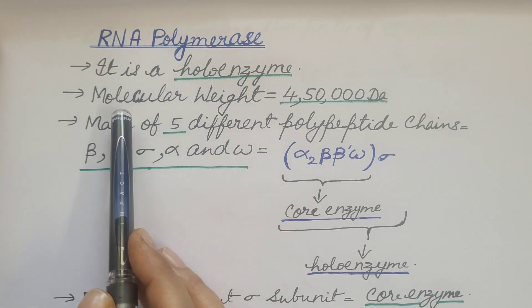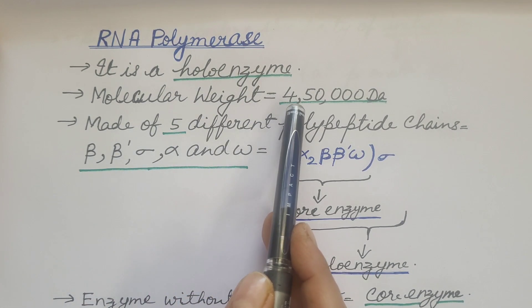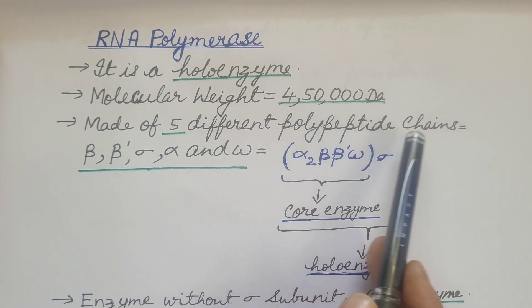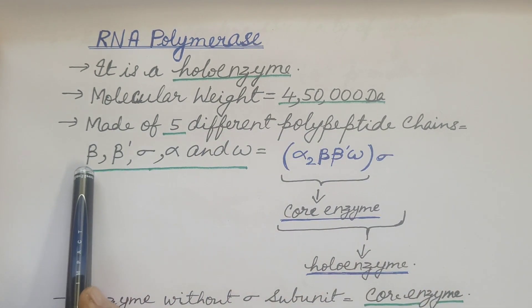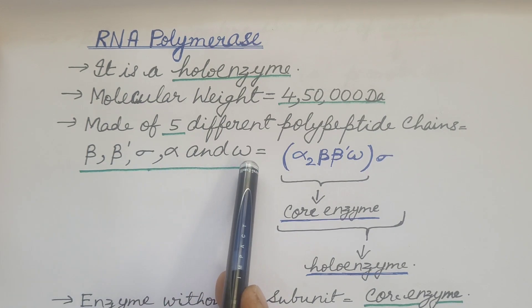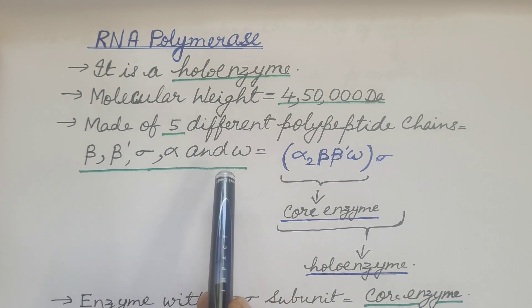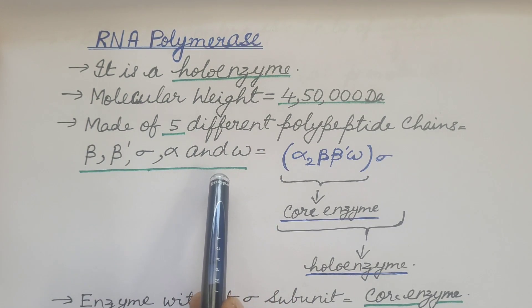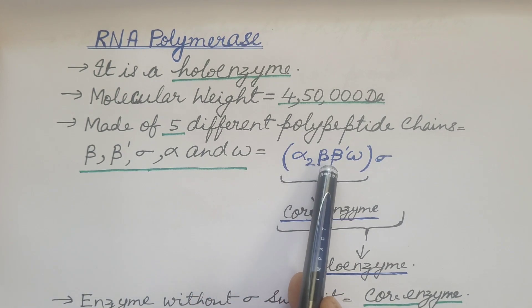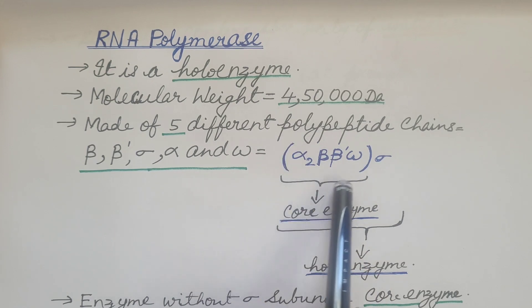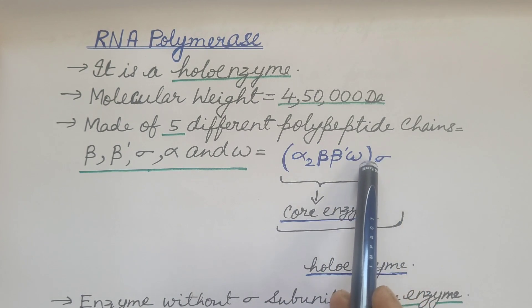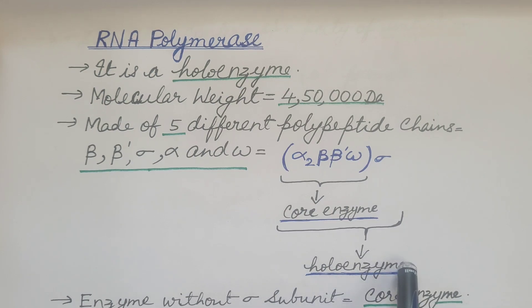RNA polymerase is a holoenzyme with a molecular weight of 450,000 Daltons. It is made up of five different polypeptide chains: beta, beta', sigma, alpha, and omega — also known as subunits of the holoenzyme. Alpha, beta, beta', and omega together form the core enzyme, and the core enzyme along with the sigma subunit is known as the holoenzyme.